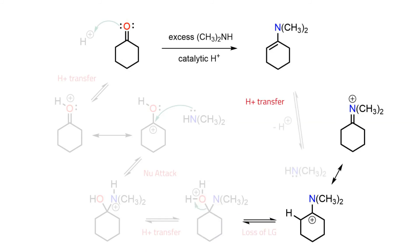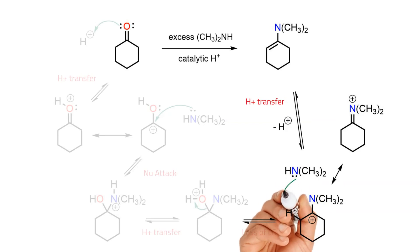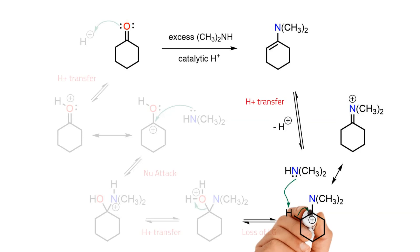Unlike in the case of primary amines, there is no acidic N–H bond here to allow for N-deprotonation and imine generation. Instead, a proton is removed from the beta-carbon to form a pi-bond and the enamine product. This step also regenerates the acid catalyst.